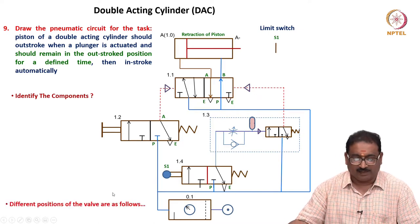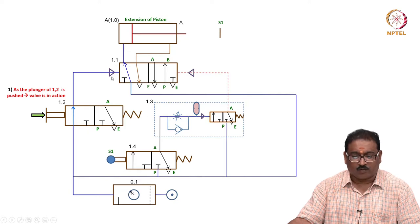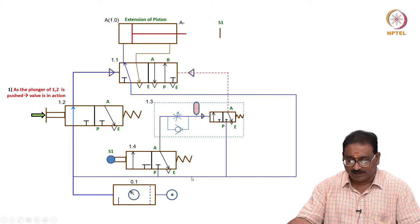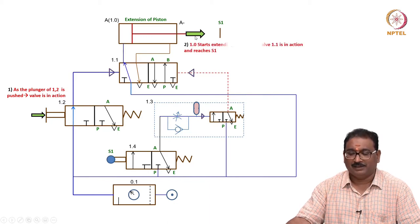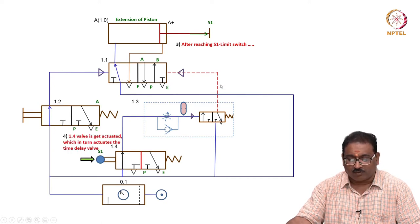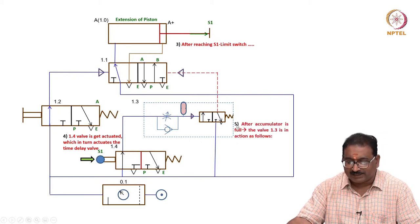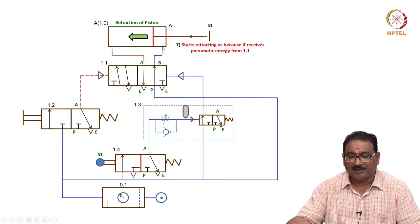How is it operating? You will see the different positions of the valve. When after pressing the button, the pneumatic energy actuates the left position of the pilot-operated valve. Air comes here, enters the head side, and starts extending. After reaching the end position, this 3/2 valve does not actuate immediately - please remember, it will not actuate because it is filling the accumulator. Time delay is adjusted using the metered RE5. Once the accumulator is full, the valve gets actuated - see here, it will come here. Then the cylinder starts retracting because it receives pneumatic energy from 1.1.